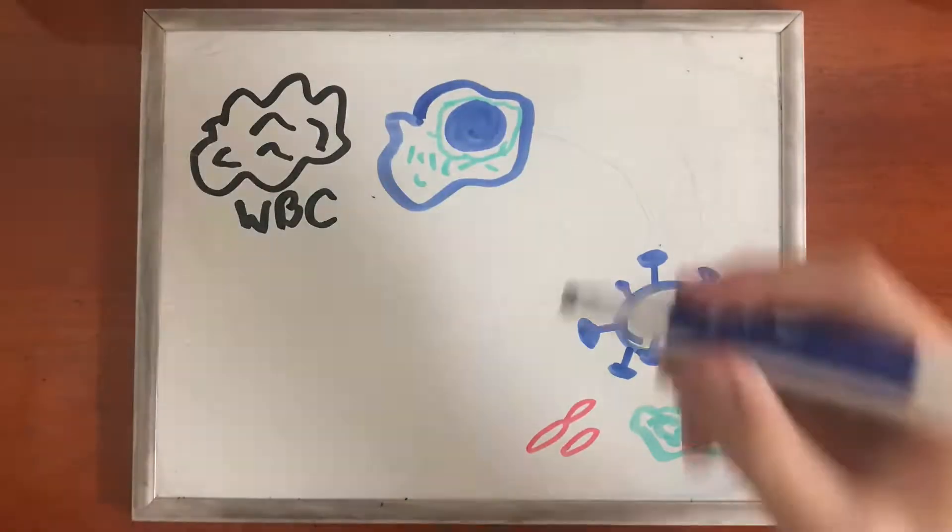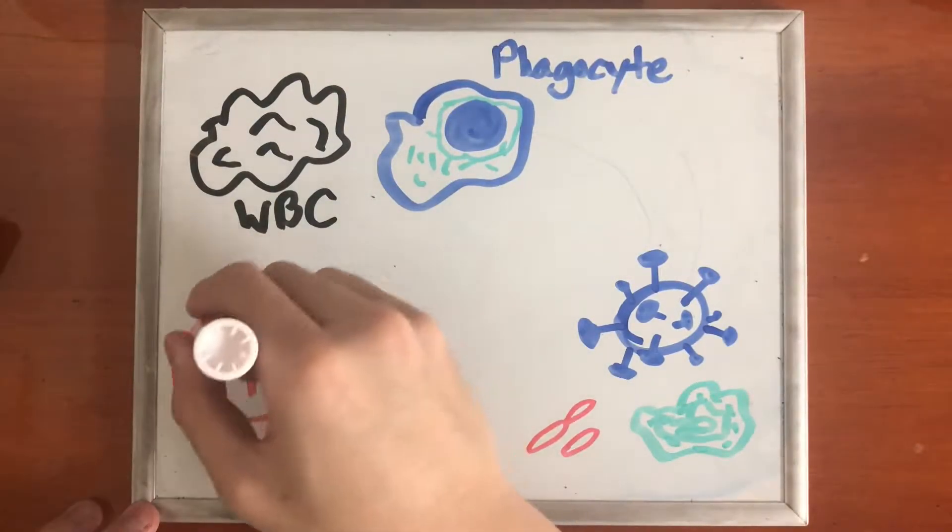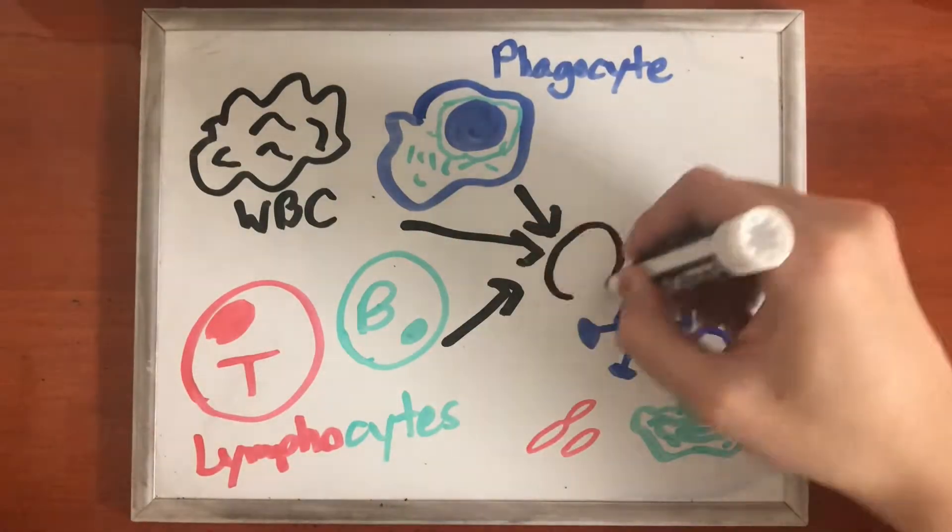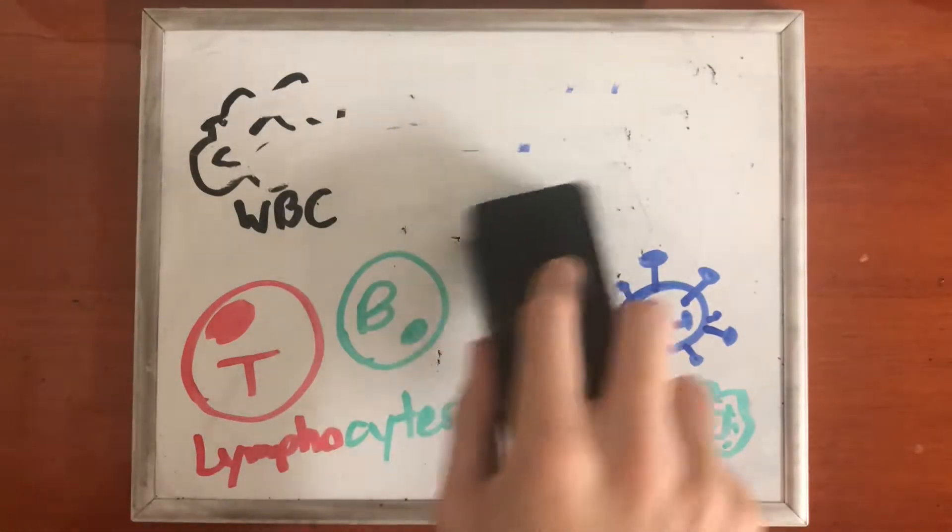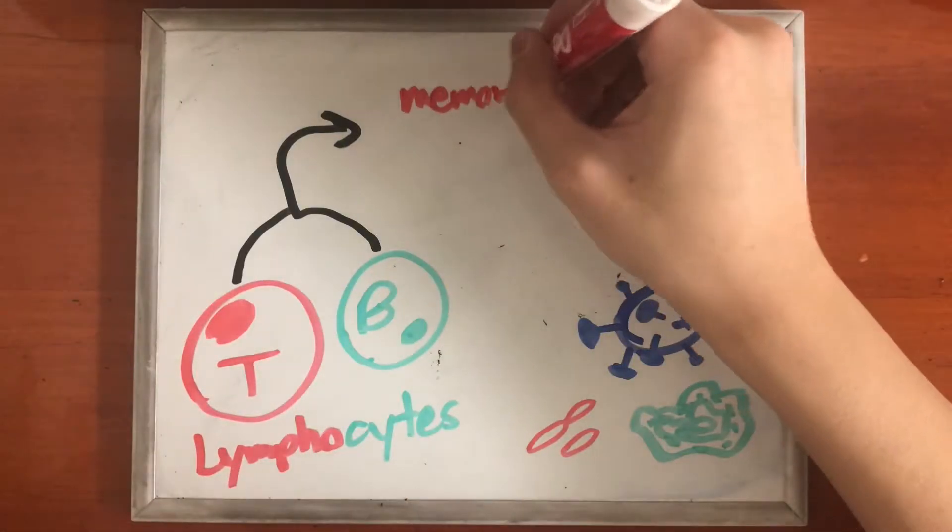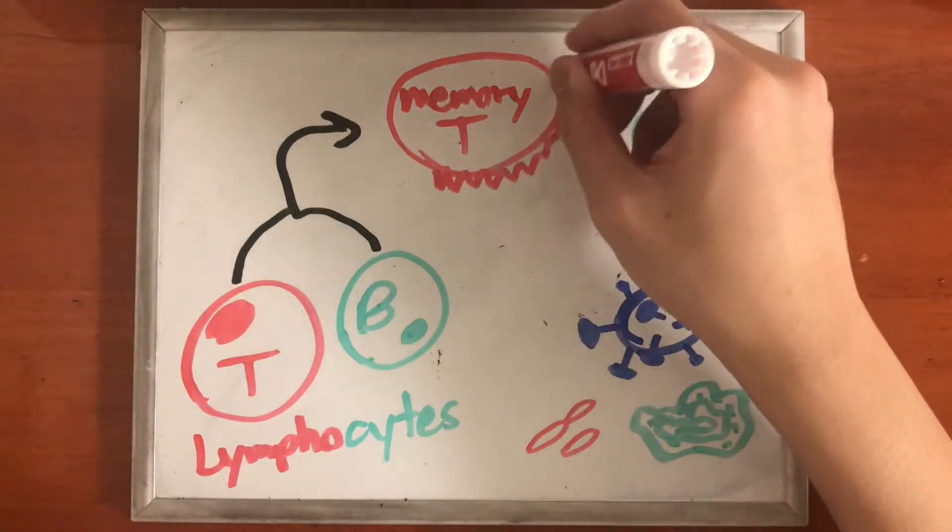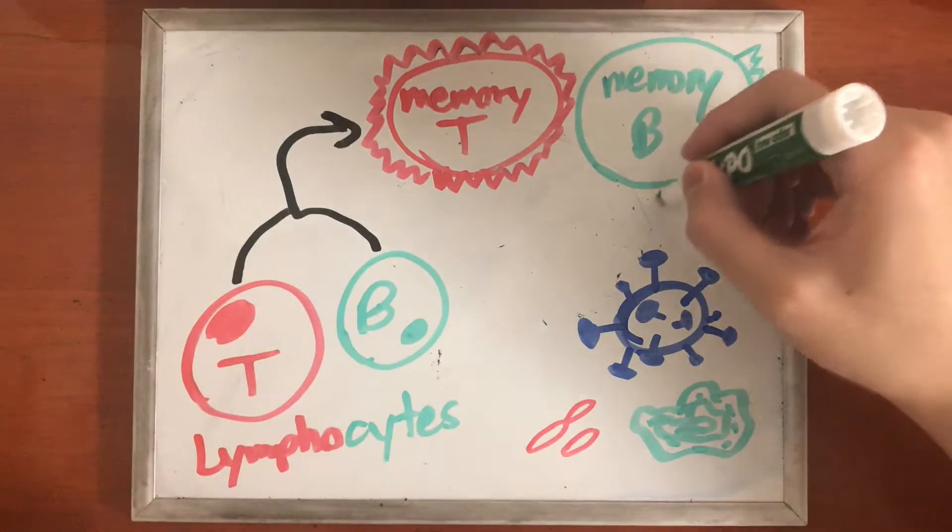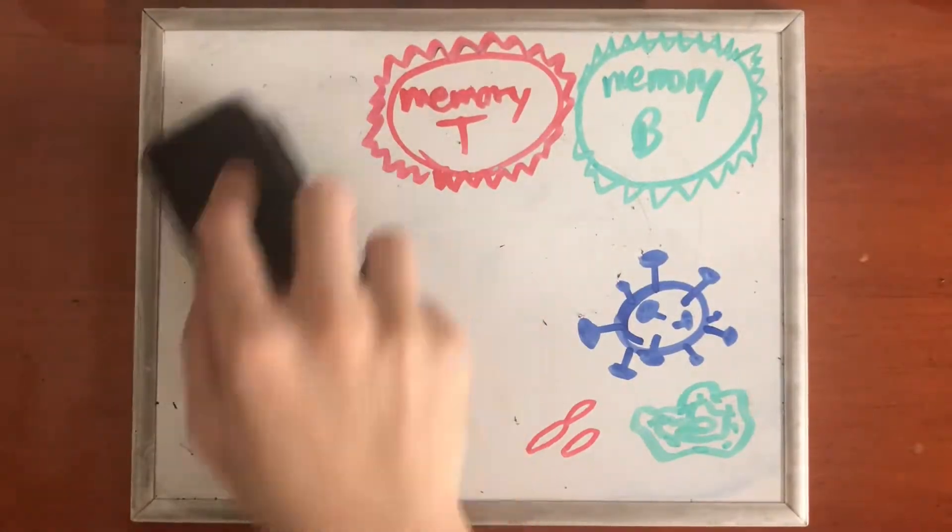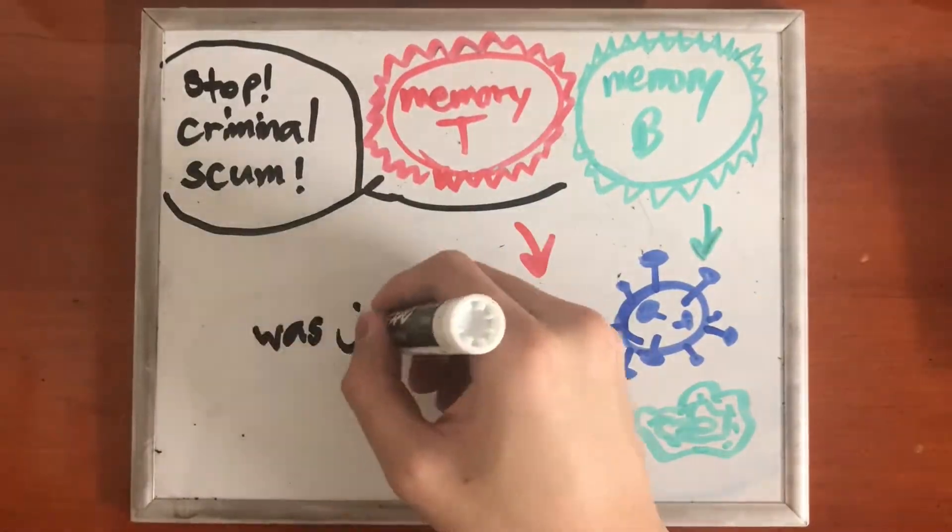Then the white blood cells, phagocytes, and lymphocytes of the immune system will be activated to neutralize it. Once the threat is taken care of, the T cell and B cell lymphocytes will leave behind memory cells that allow the body to remain on high alert to detect the very same threat next time and immediately mount a defense.